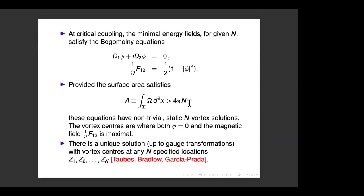The area — defined as the integral of Ω over the surface — must be bigger than 4πN for vortices to exist. I'll be interested in large N, so the area must be large. I assume the area is a multiple of 4πN and think of N/A as the number density, which must be less than 1/(4π) by some finite amount even as N gets very large.